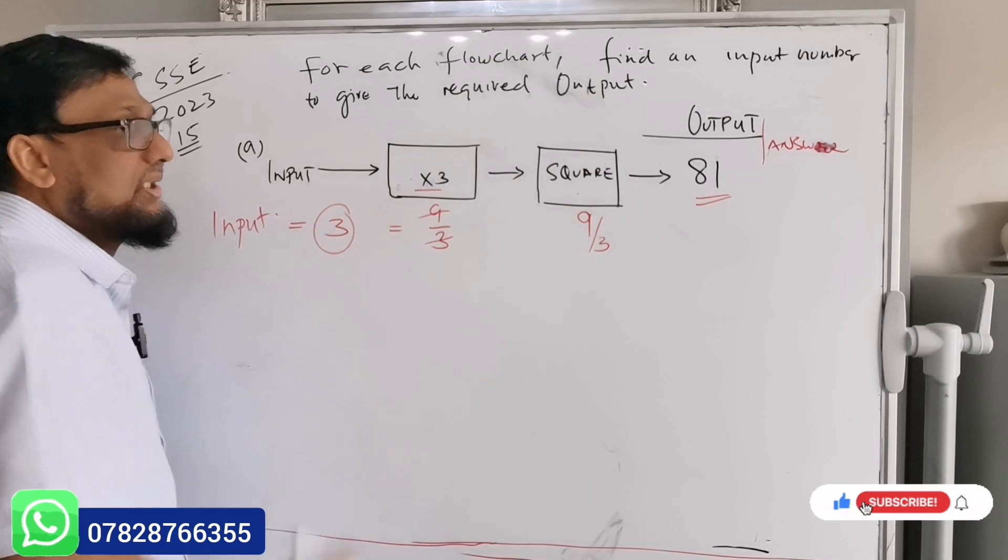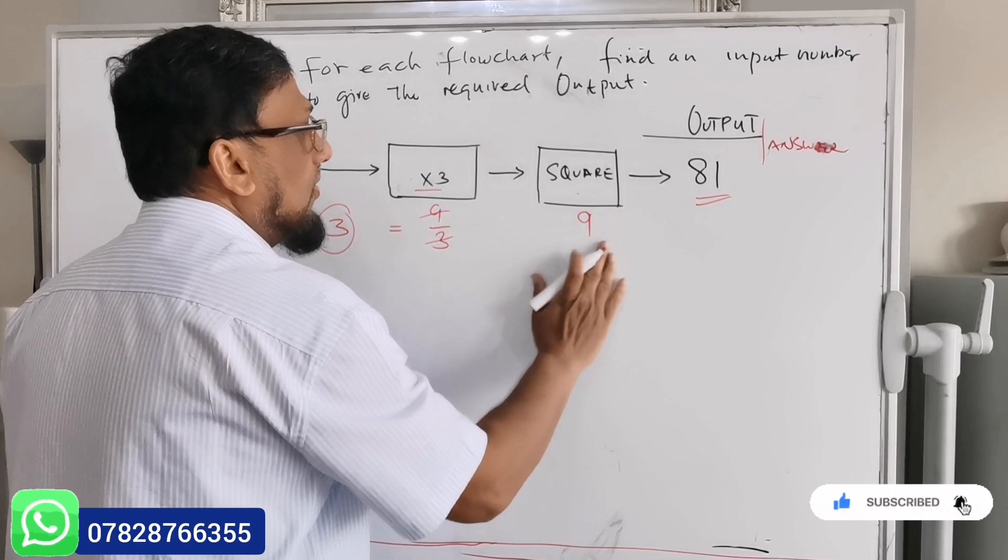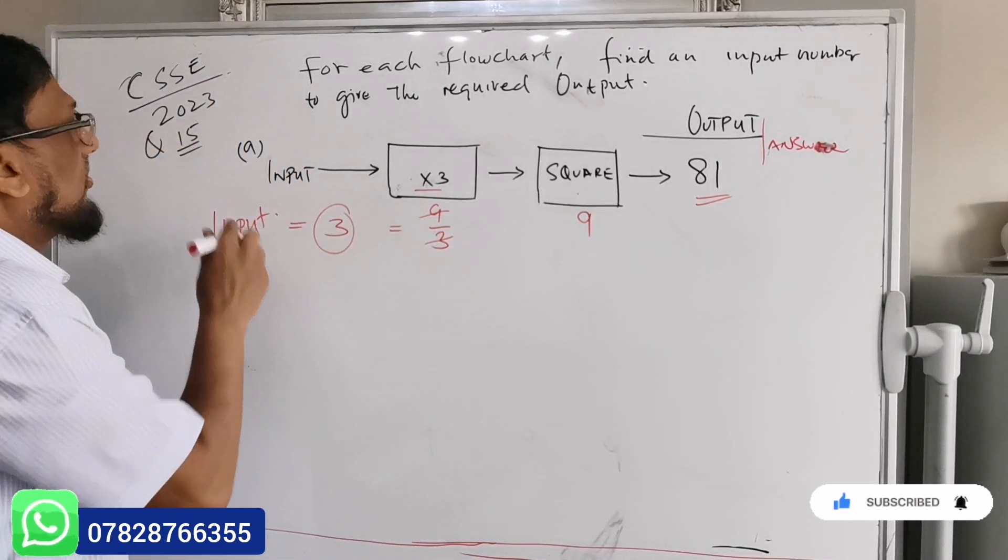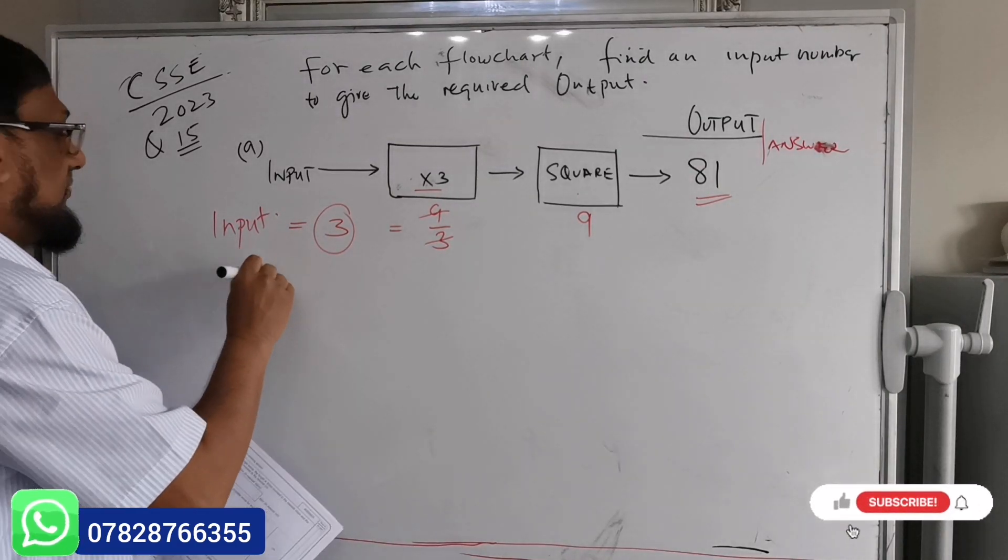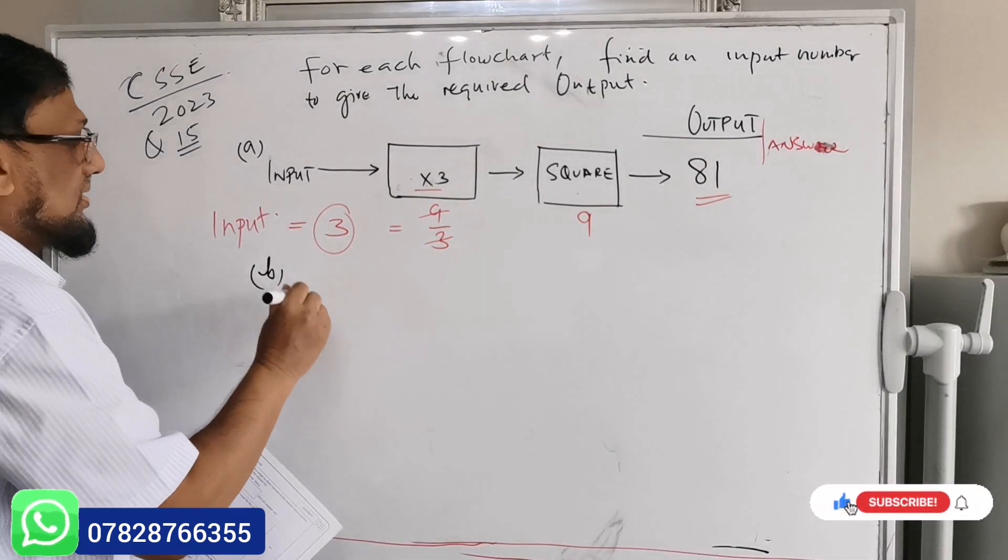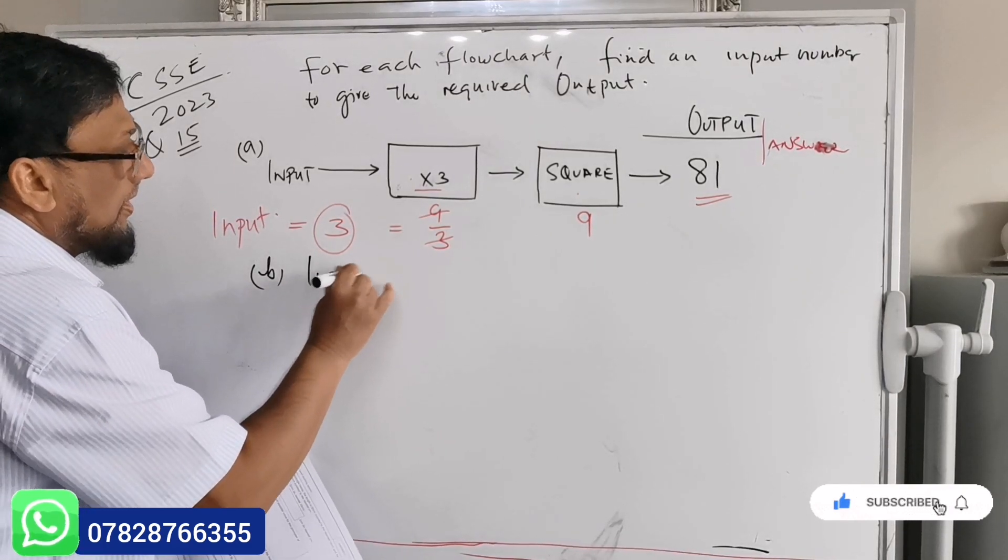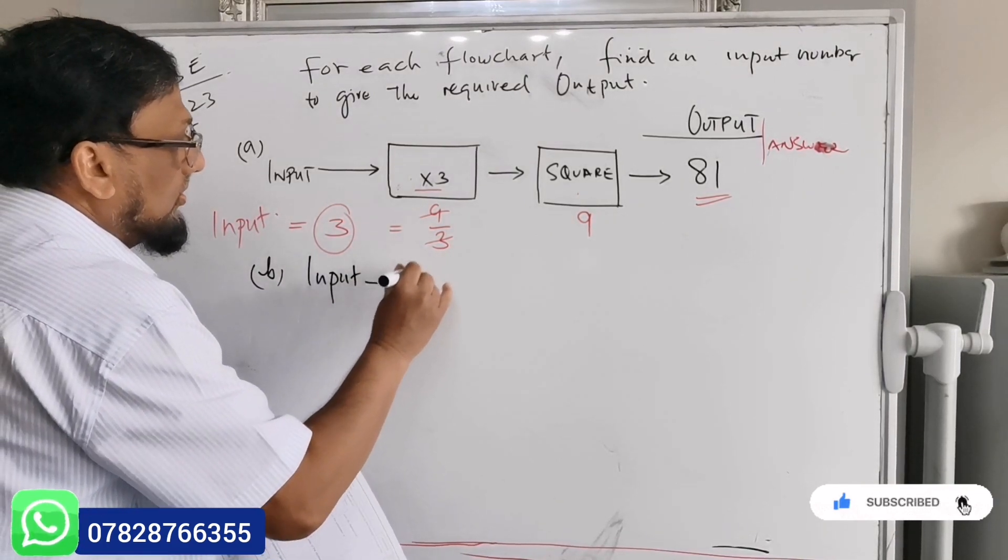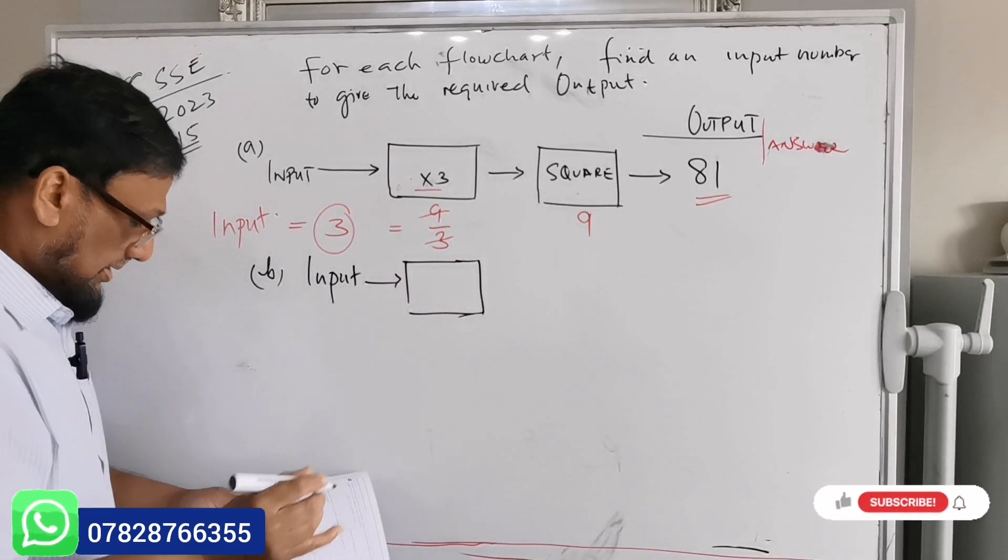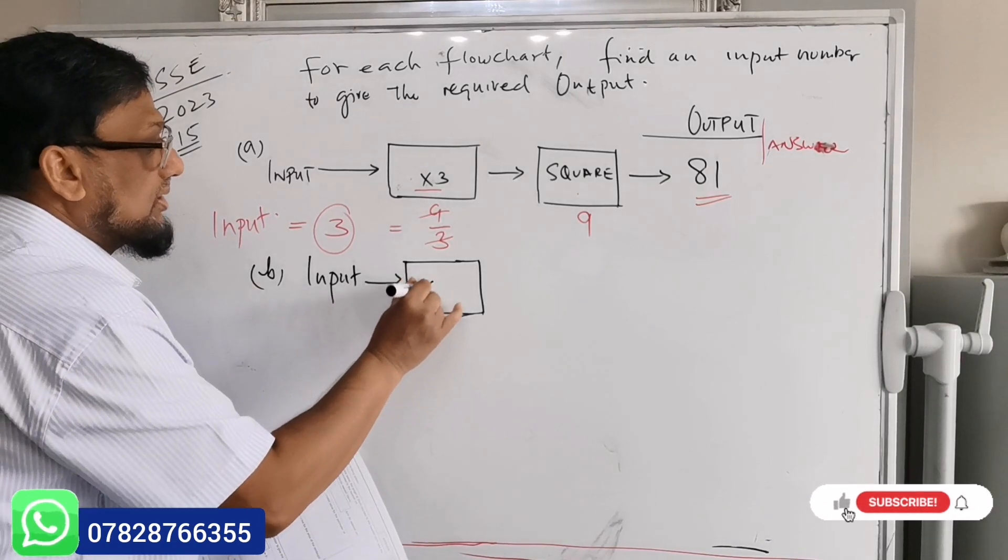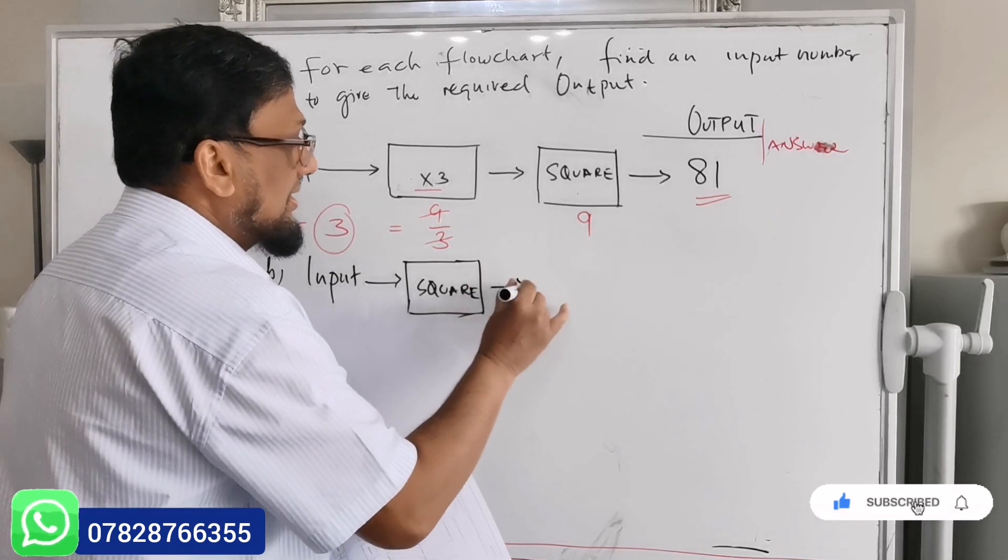Part B, same as the flowchart given but with a different value. So look at this one. Same, it says input then arrow, so this time this one is going to be square and this one is times by 3, and then output is 75.